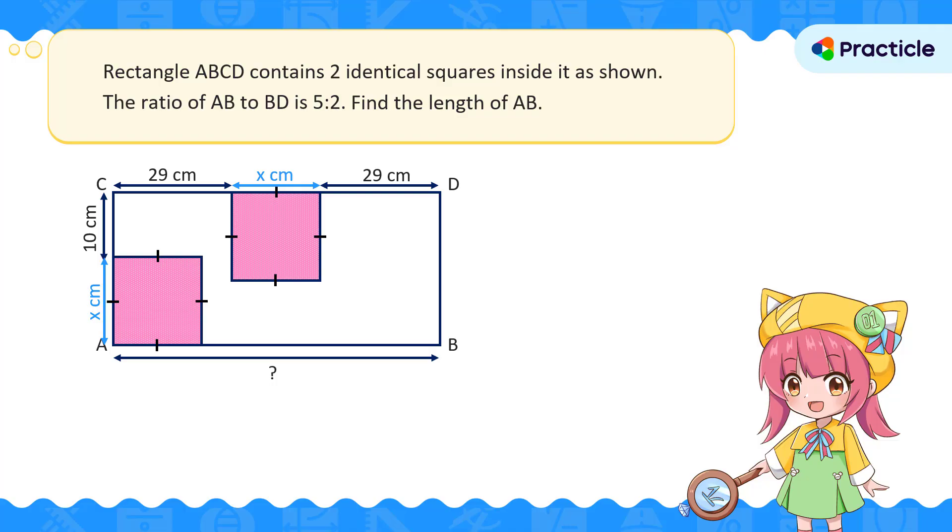Now, here's the important clue. The ratio of AB to BD is 5 to 2. What does this ratio mean? This means that we can represent AB with 5 units and BD with 2 units. Let's connect this to the measurements that were given in the diagram.